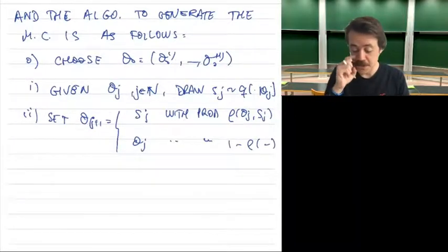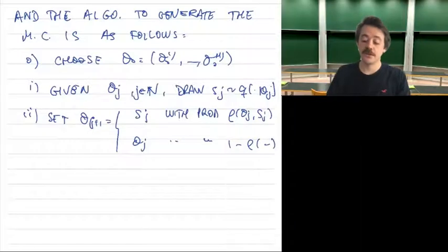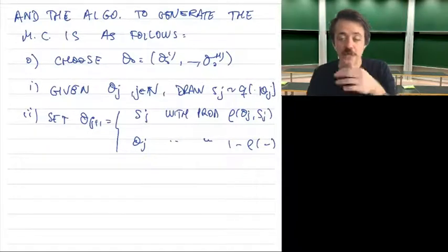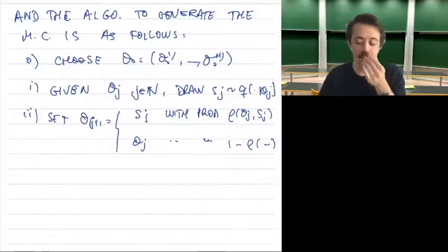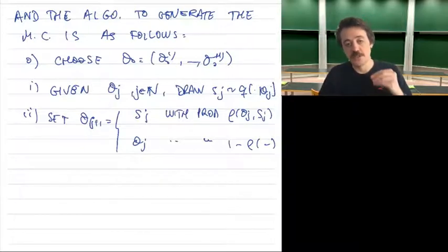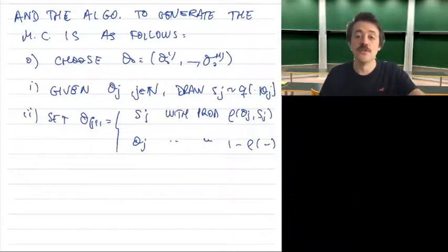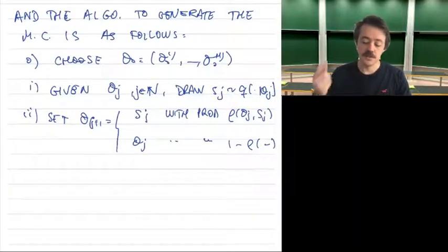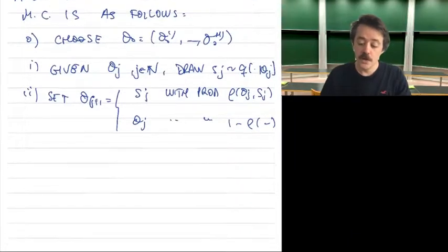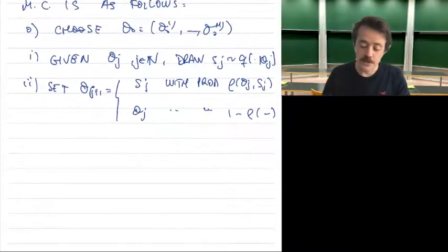This is different from the acceptance-rejection algorithm: in accept-reject we're not creating a Markov chain, and at the technical level the steps differ because accept-reject keeps trying until acceptance, whereas here we are satisfied with the previous state when the proposal is rejected.